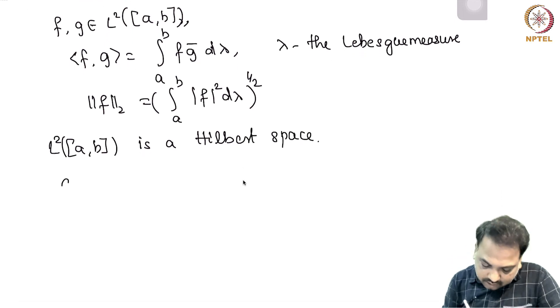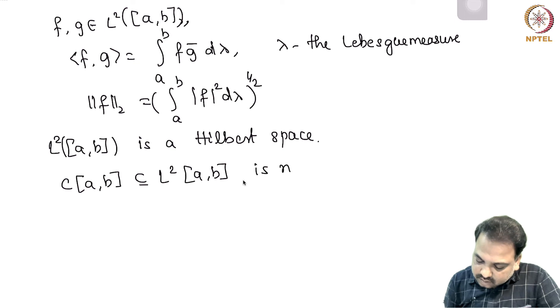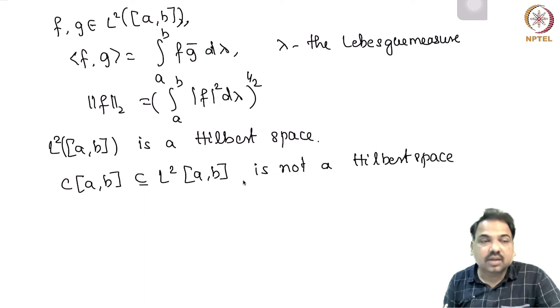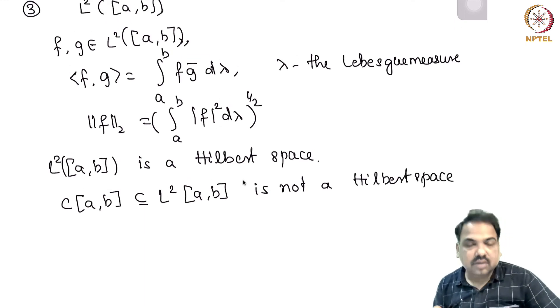We can also show that C[a,b], which is a subspace of L^2[a,b], is not a Hilbert space. Here again, we have to look at the same inner product as in L^2[a,b].